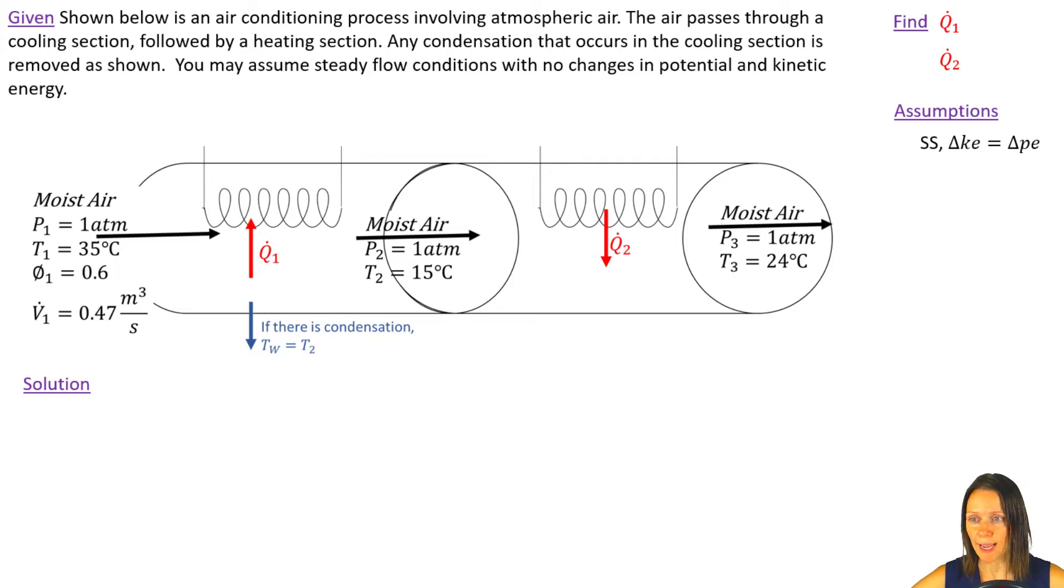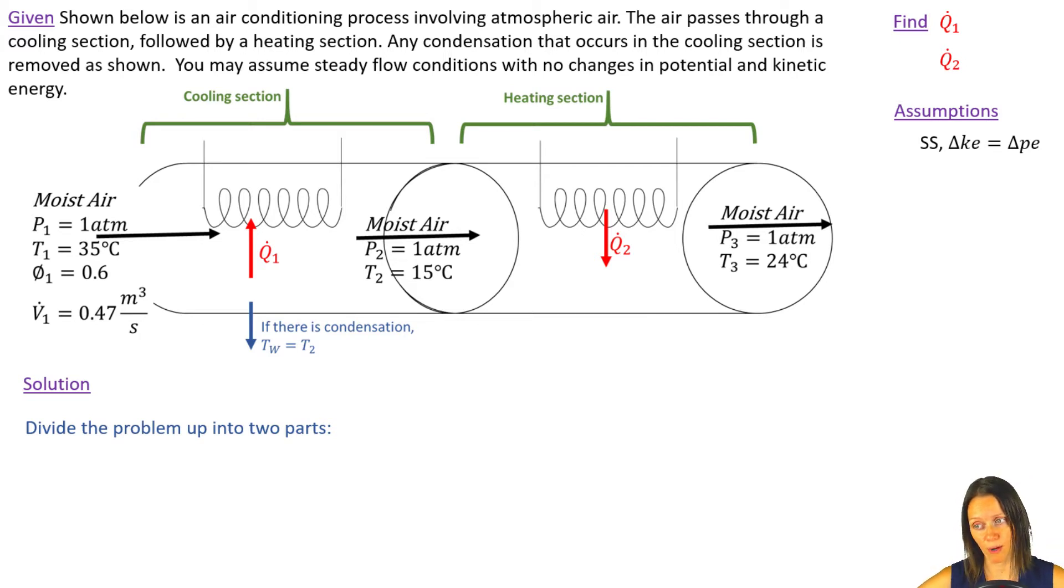Since I've got a cooling process, I do need to verify whether or not that's a condensation problem. So I'm going to divide it up into two parts. I'm going to look at the cooling section, which may be a simple cooling process or it may be a dehumidification process. I've got to figure out which one of those it is, and then I've got a simple heating process.